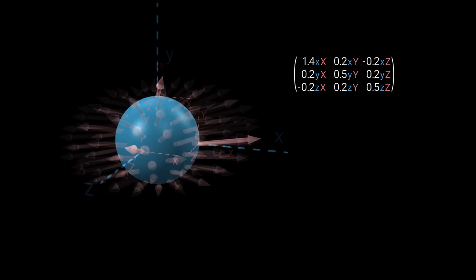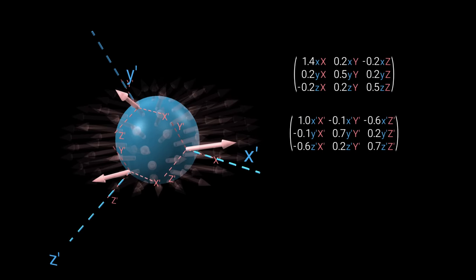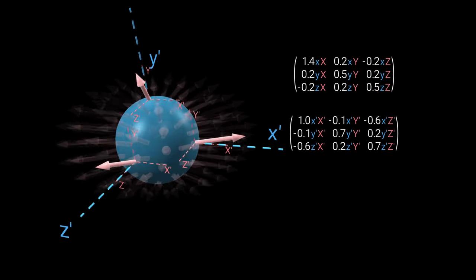We can choose a different coordinate system, and we'll get different components. We can say this system describes the tensor from this point of view.